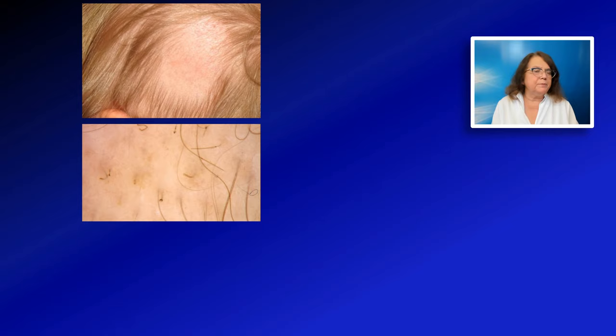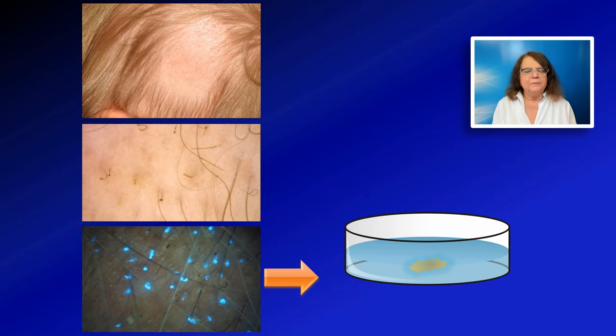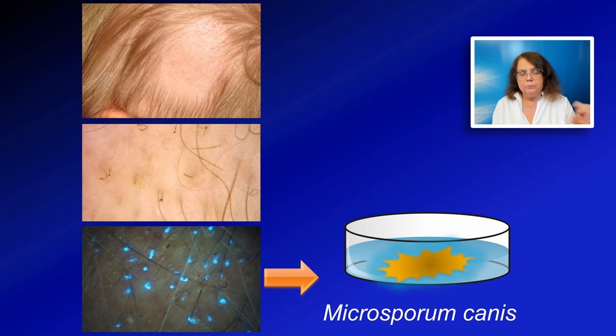I would like to tell you about one more method which we also described some time ago. This is a three-year-old child with a hairless area of two-month duration. We performed trichoscopy — it was not so clear, maybe a comma hair here or there but nothing really specific. So we used a dermoscope with UV light, and when we did, we saw clear fluorescence. This was confirmed by mycology culture to be Microsporum canis, with its typical greenish or bluish fluorescence.